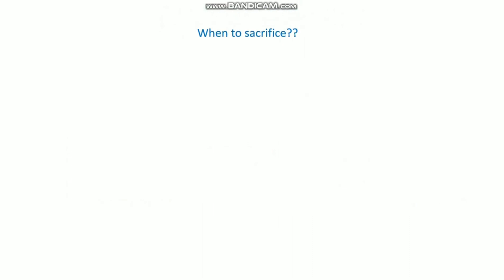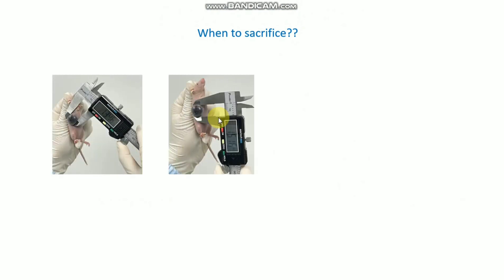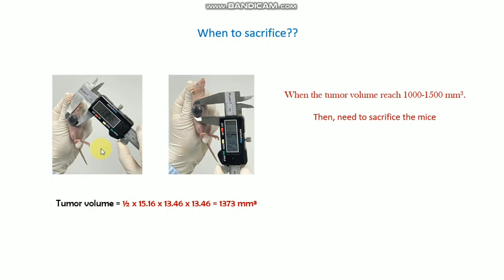Another important question is when to sacrifice the mice. When the tumor volume reaches around 1000 to 1500 mm³, you should consider sacrificing the mice. For example, a tumor volume of 1373 mm³ is a very large tumor and would warrant sacrifice, though this also depends on different experimental conditions.